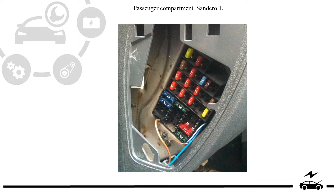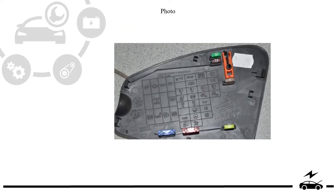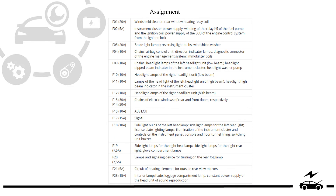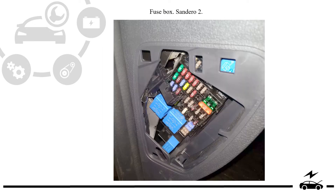Passenger compartment fuse box, type 1: photo, diagram, and assignment. Fuse box type 2: diagram and designation.